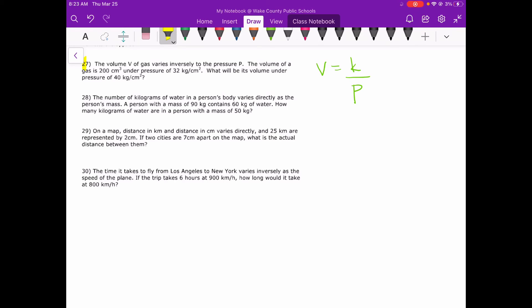The volume of a gas is 200 centimeters cubed under pressure of 32. So the scenario that they start us with is 200 is equal to K over 32. So the volume is 200 when the pressure is 32, or the pressure is 32 when the volume is 200. So that gives us enough to solve for the constant for all these scenarios here. Cross multiply, you get 6400 is equal to K.